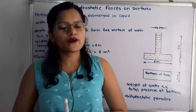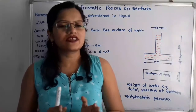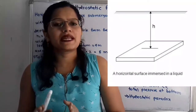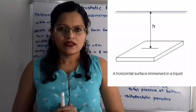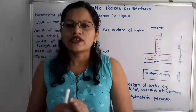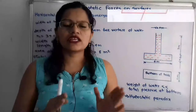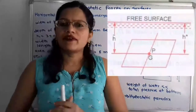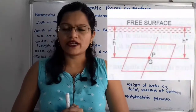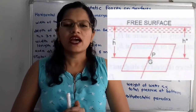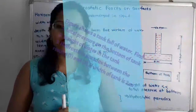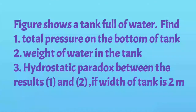Hello friends, this is Priyanka. Today we are going to solve a problem on hydrostatic forces on surfaces. In this video, we will solve a problem about a horizontal plane surface submerged in liquid. For a horizontal plane surface, each and every point is at equal distance from the free surface of the liquid, so the depth of the center of gravity and the depth of the center of pressure are equal — that is, h' = h̄.